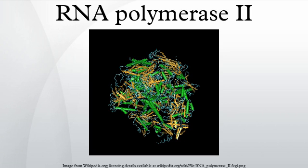RPB11 is itself composed of three subunits in humans: POLR2J, POLR2J2, and POLR2J3. RPB12 also interacts with RPB3.